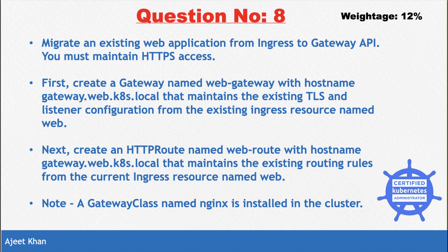Next, we need to create an HTTPRoute named 'web-route' with the hostname 'gateway.web.kts.local'. It should maintain the existing routing rules from the current ingress resource named 'web'.